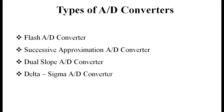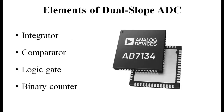Now let's look at the elements of a dual slope ADC. The main elements are: first, an integrating operational amplifier; second, a comparator, which we know is used to compare two voltages and accordingly give a logic output; third, a logic gate for starting and stopping a counter; and fourth, a binary counter which will count the time pulses or clock pulses, resulting in conversion of the input signal into a digital output form.